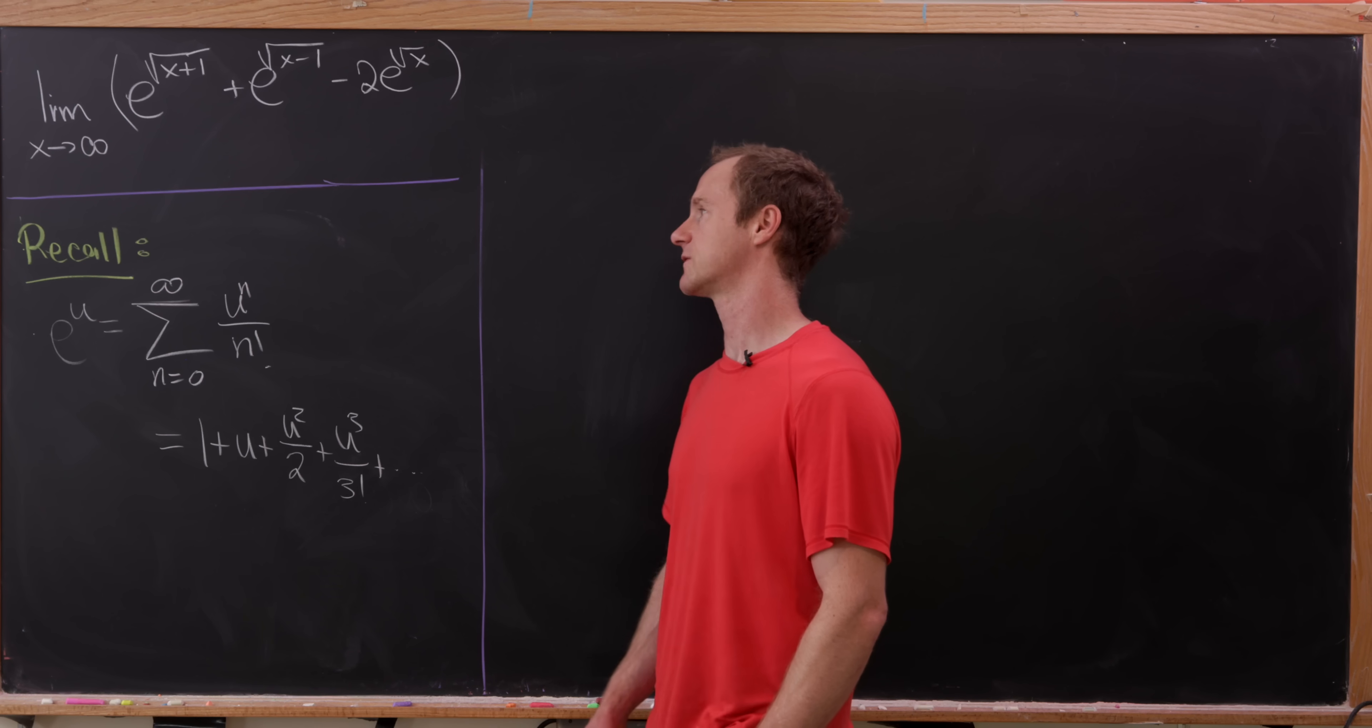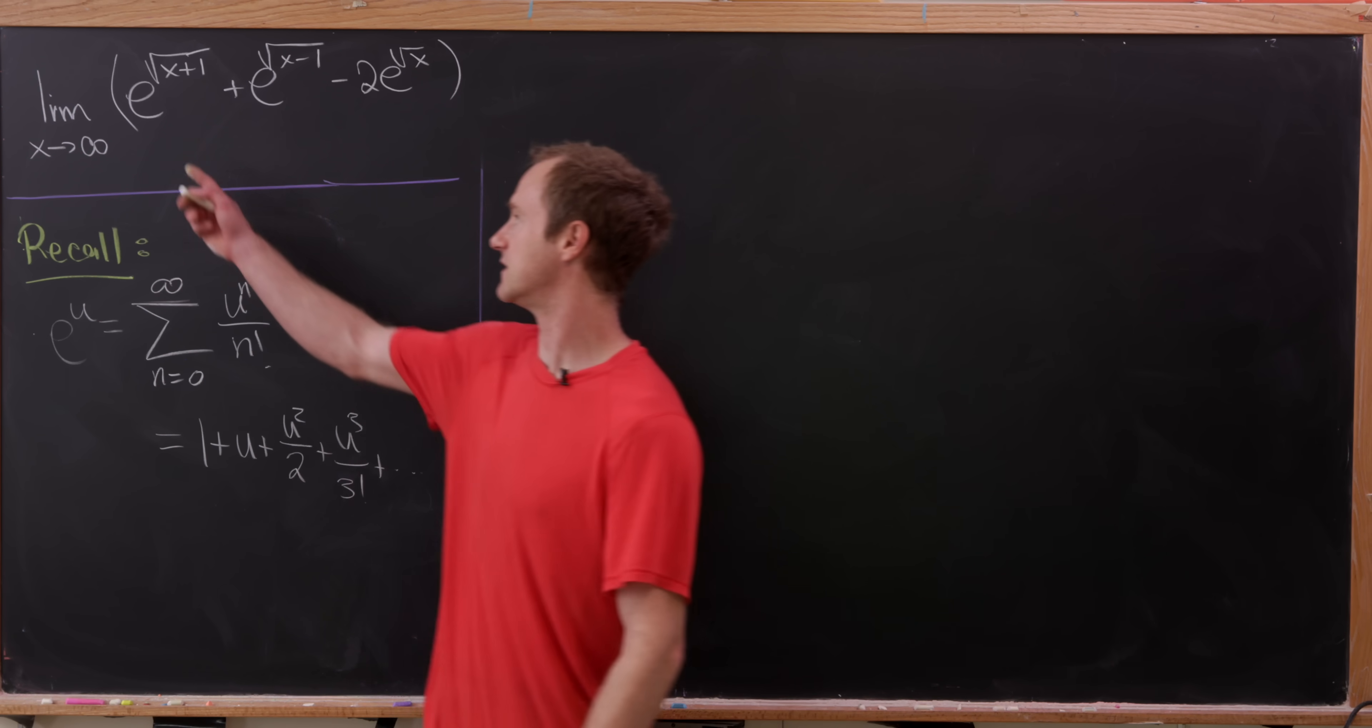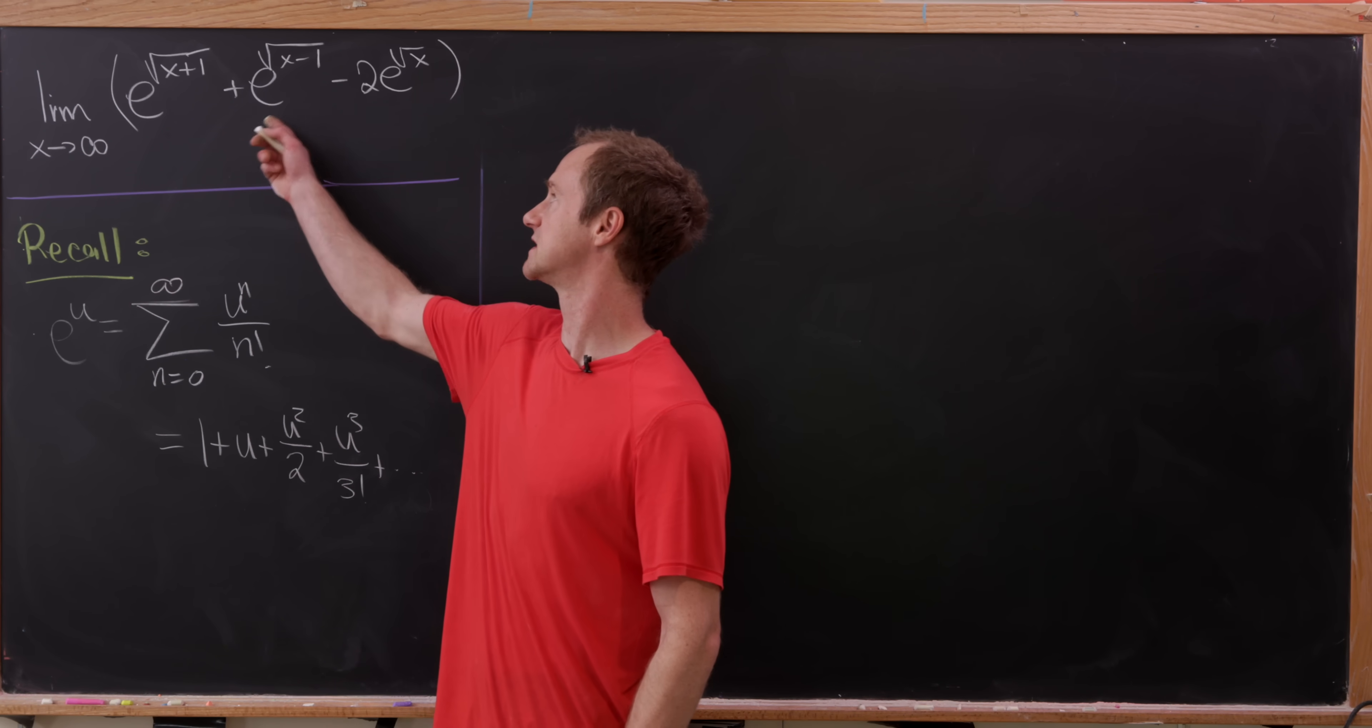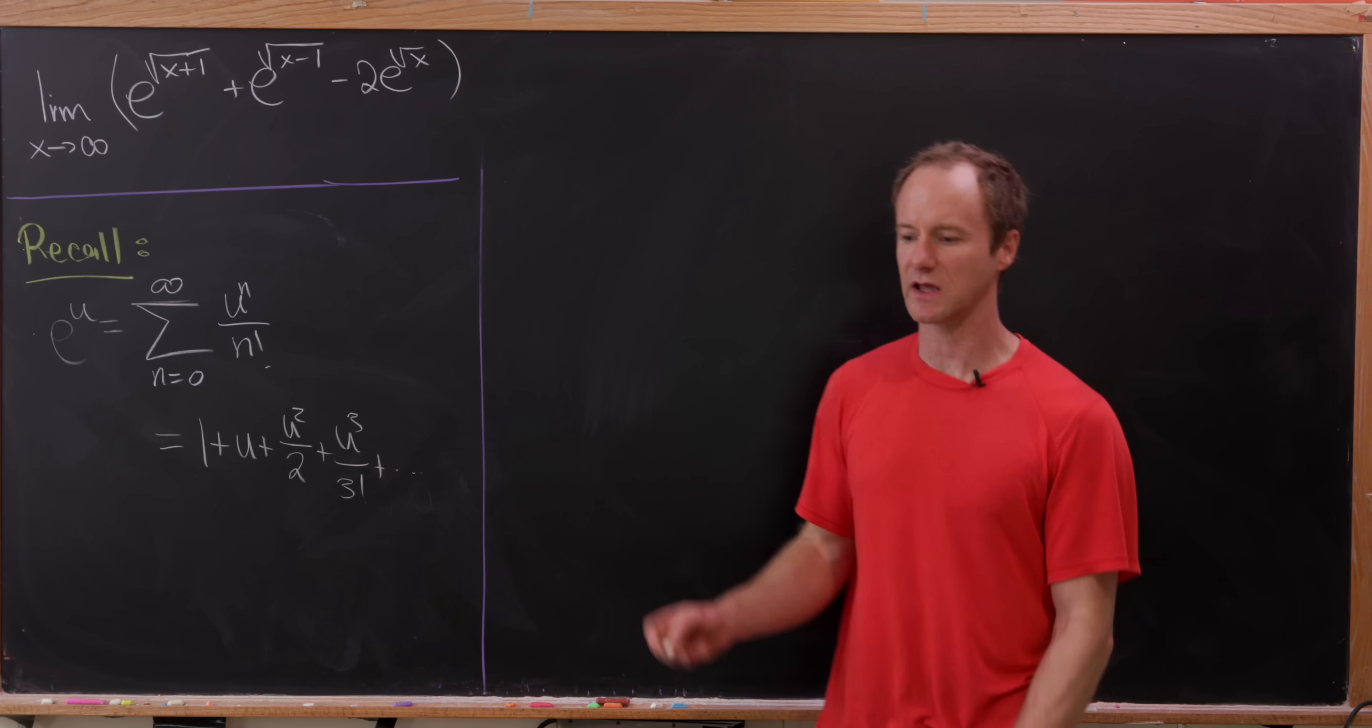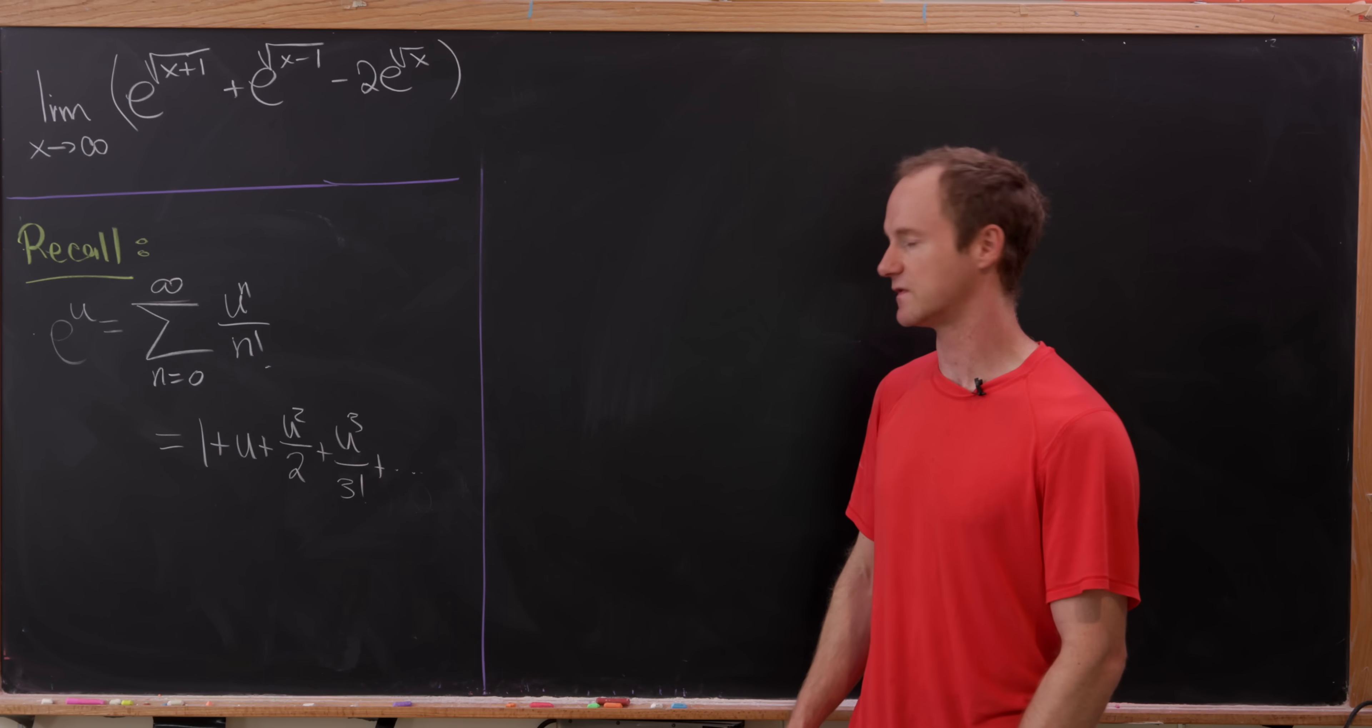So let's start by observing that if x approaches infinity, this term approaches infinity, so does this one, so does this one. So we really have something that's kind of looking like infinity plus infinity minus 2 times infinity.